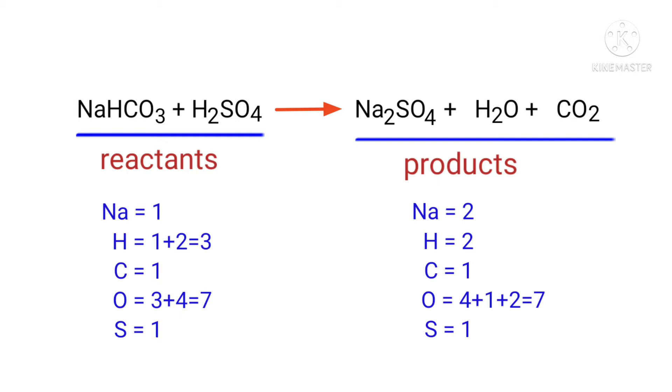The number of atoms are not balanced on both sides. To balance the chemical equation, we need to use coefficients. A coefficient is a number that we place in front of a chemical formula.